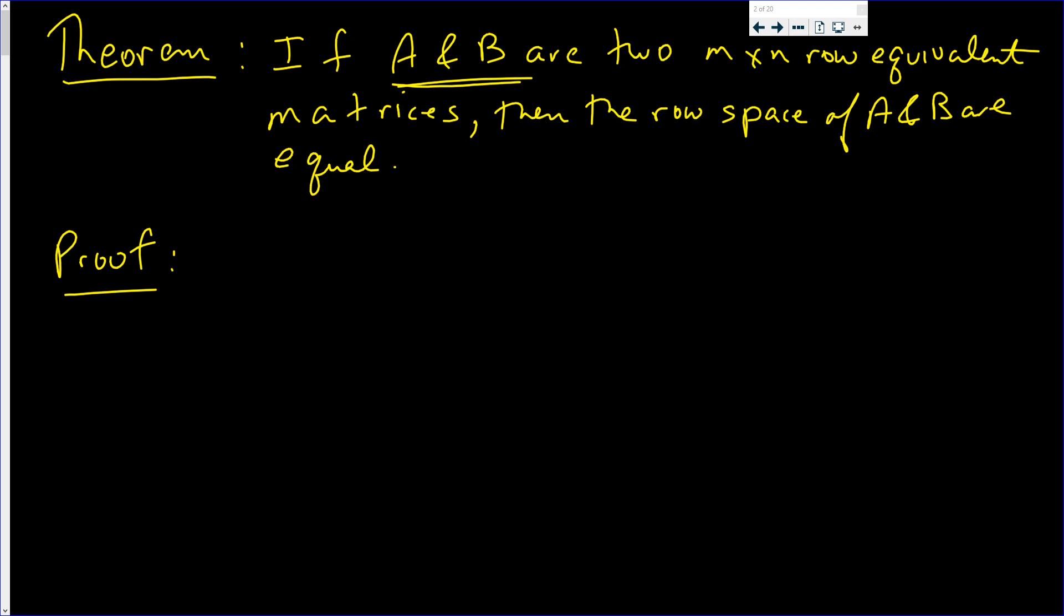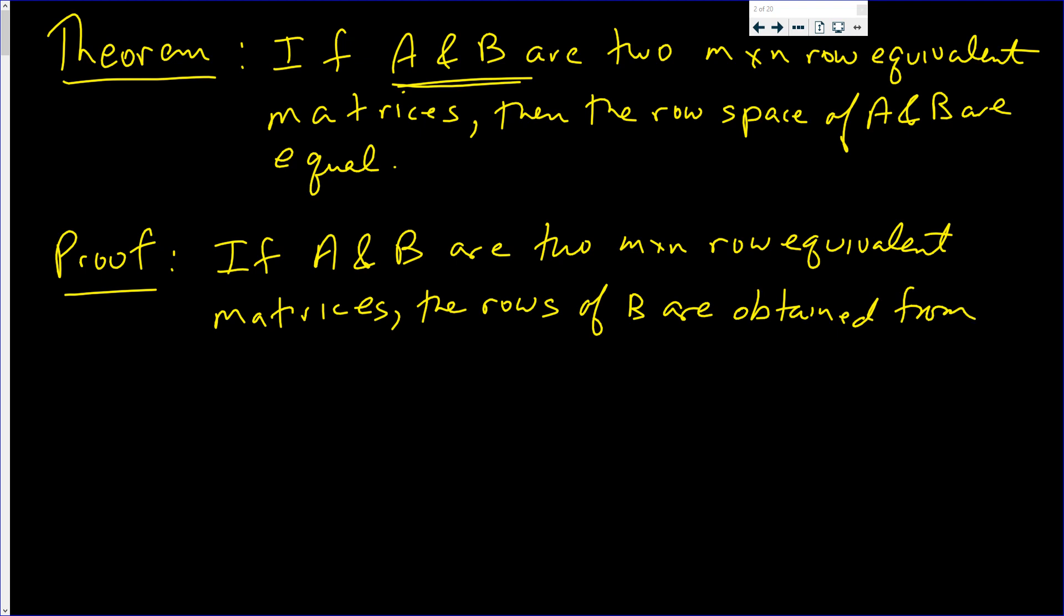So the proof goes like this. Let's start with what is given. If A and B are two n by n row equivalent matrices, then the rows of one, say B, are obtained from the rows of A. How is this?